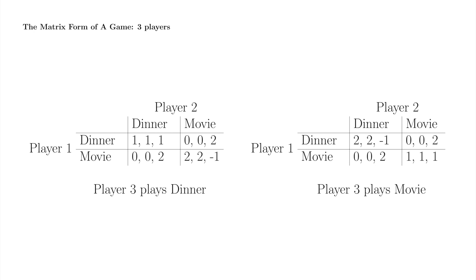The three players simultaneously and independently choose dinner or movie. Player 1 is the row player, and player 2 is the column player, as in Prisoner's Dilemma. Player 3 is the matrix player, who chooses either dinner, in which case the players play the games shown in the left matrix, or else chooses movie, in which case the players play the games shown in the right matrix.